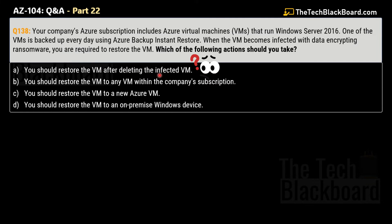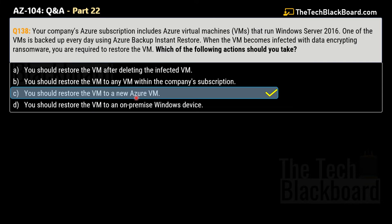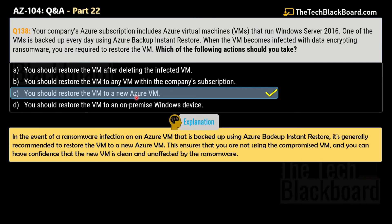Option A — restoring after deleting the infected VM — is risky because the compromised machine might still be accessible and could reinfect the new virtual machine. Option B — restoring to any VM within the subscription — is possible, but restoring to a new Azure virtual machine is safer. So the correct answer is option C: restore to a new Azure virtual machine. In the event of ransomware infection on an Azure VM backed up using Azure instant restore, it is generally recommended to restore to a new Azure virtual machine, ensuring the new machine is clean and unaffected.